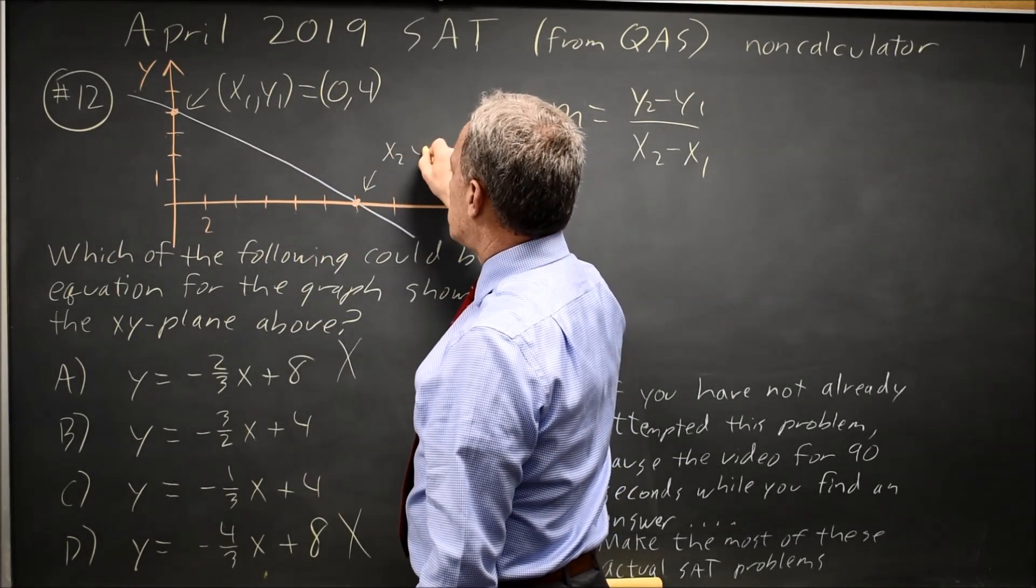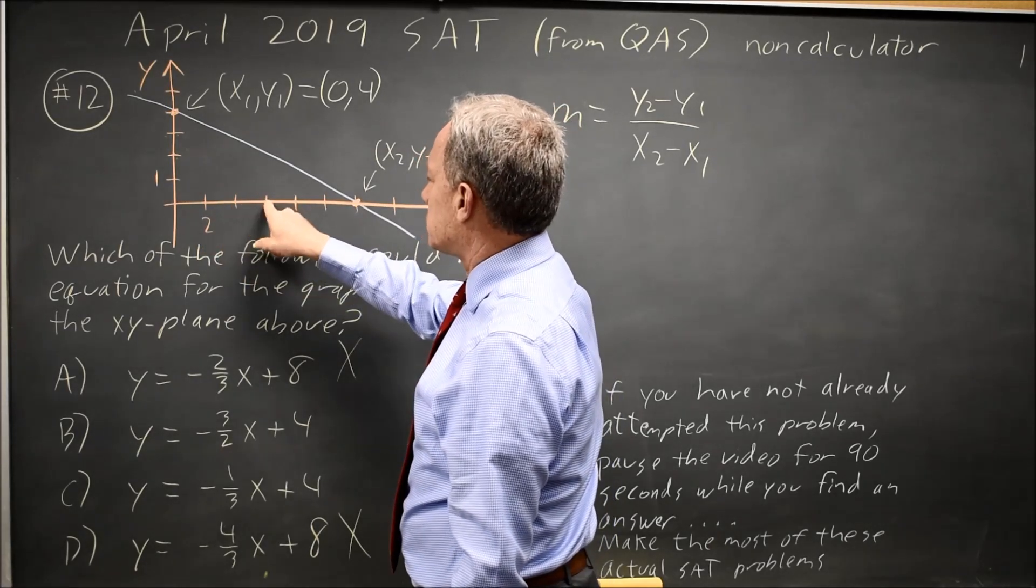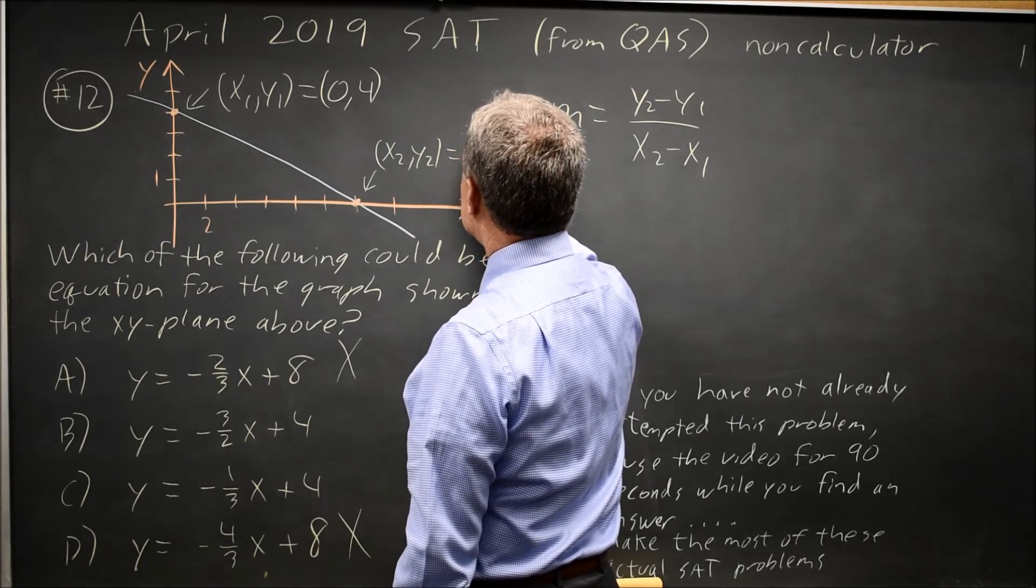So my slope is x2, y2, for this point, is two, four, six, eight, ten, twelve. X is twelve, and y is zero.